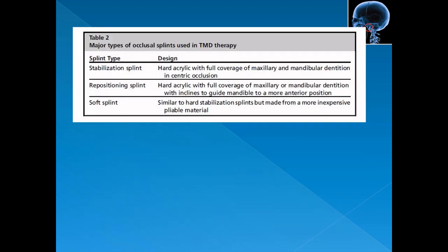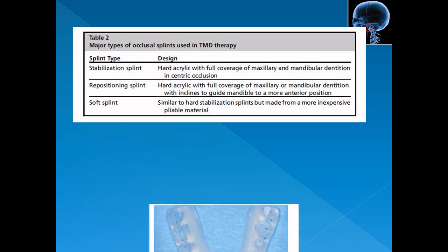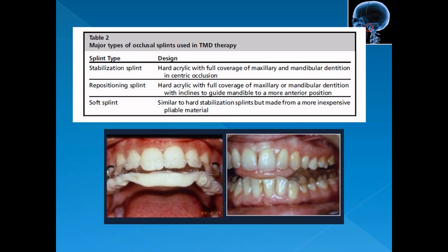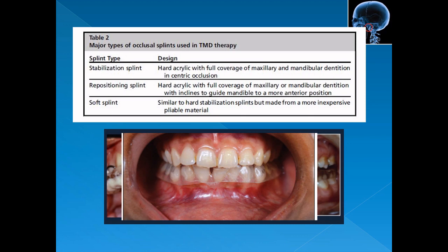The major types of occlusal splints used in TMD therapy are: stabilization splint, repositioning splint, and soft splint. The stabilization splint is made of hard acrylic with full coverage of maxillary or mandibular dentition in centric occlusion. The repositioning splint is also hard acrylic with full coverage but with inclines to guide the mandible to a more anterior position, with well-defined fossa on the occlusal surface to actively guide the mandible to a more protrusive position. The soft splint is similar to the hard stabilization splint but made from flexible material. The type of splint utilized depends upon the diagnosis.